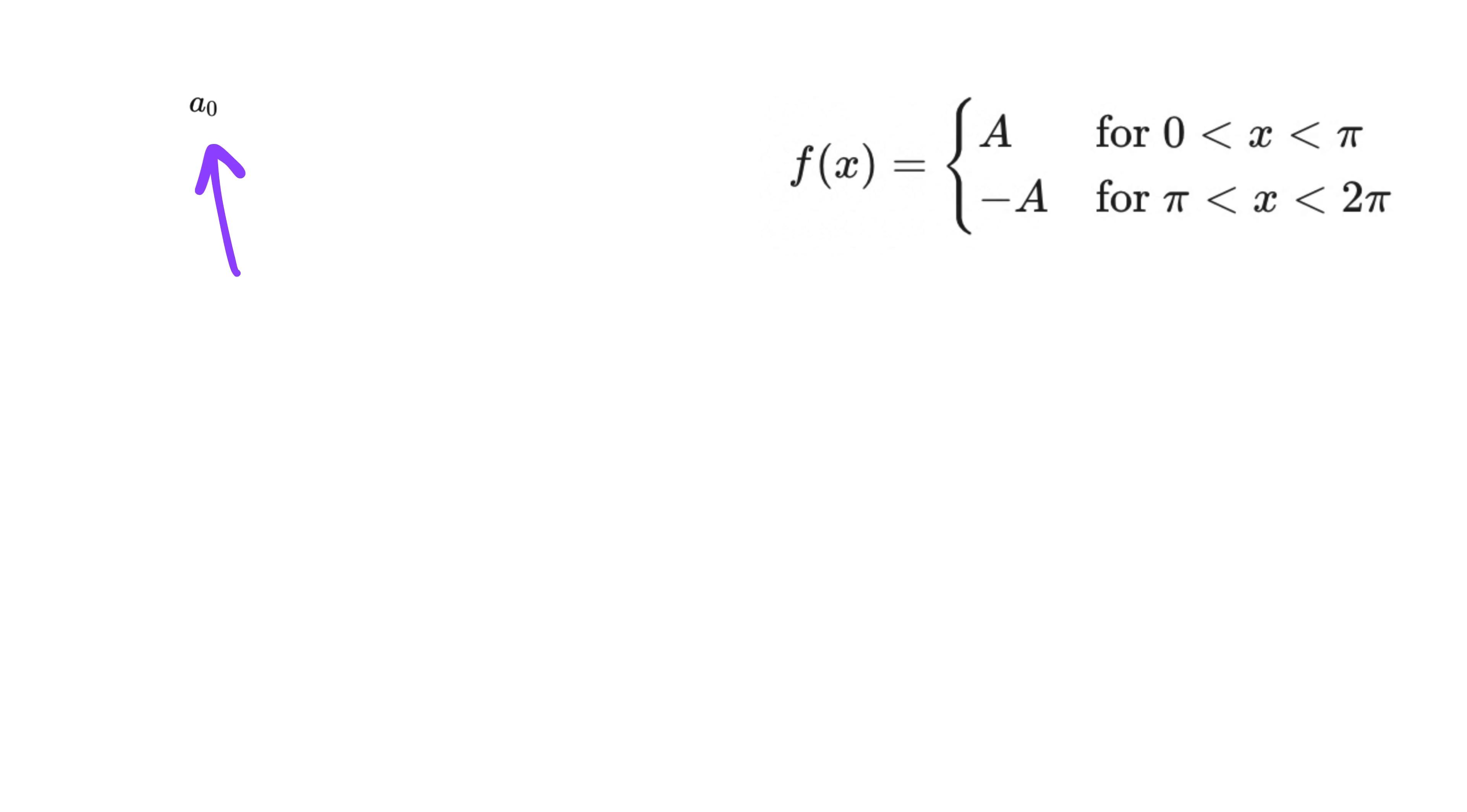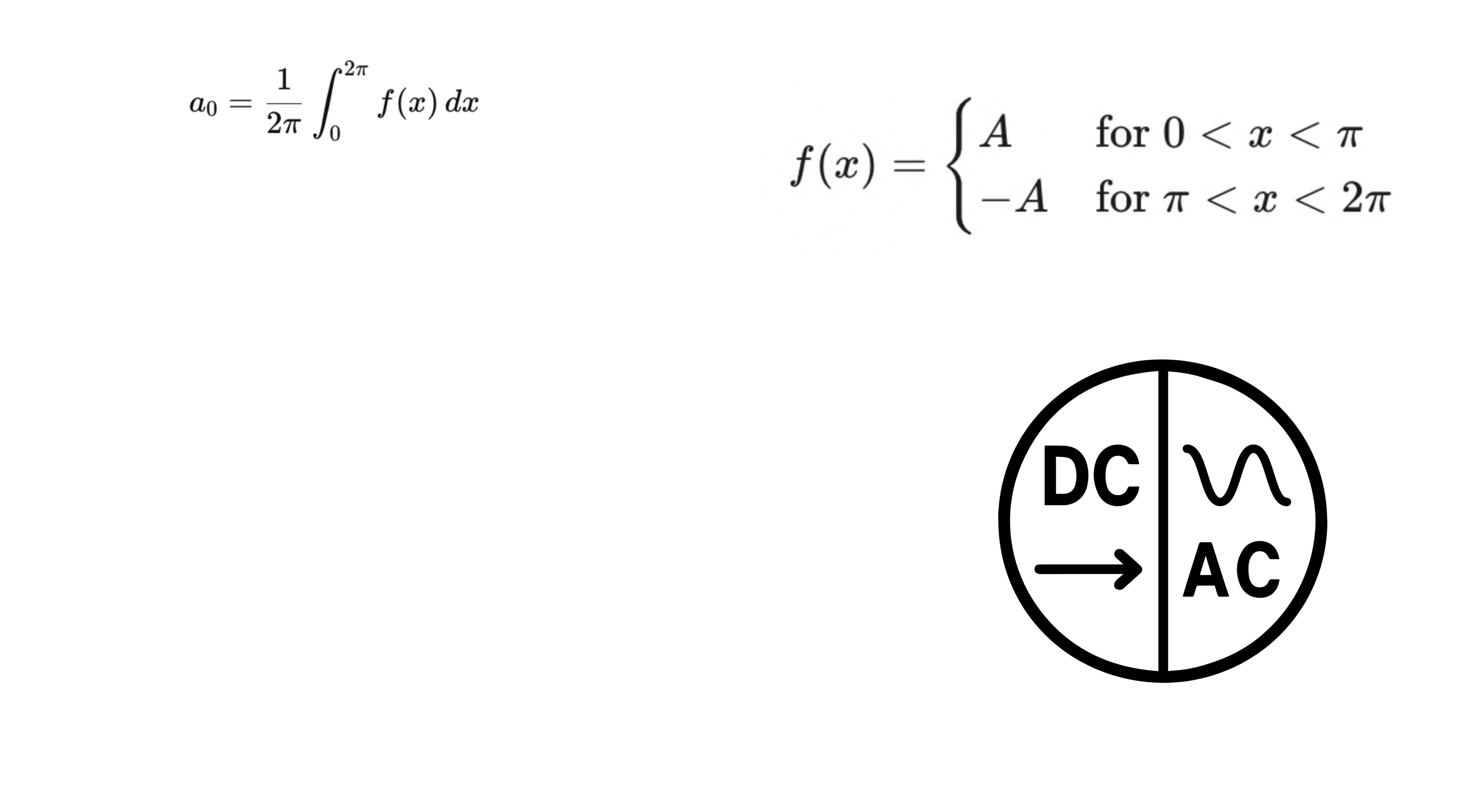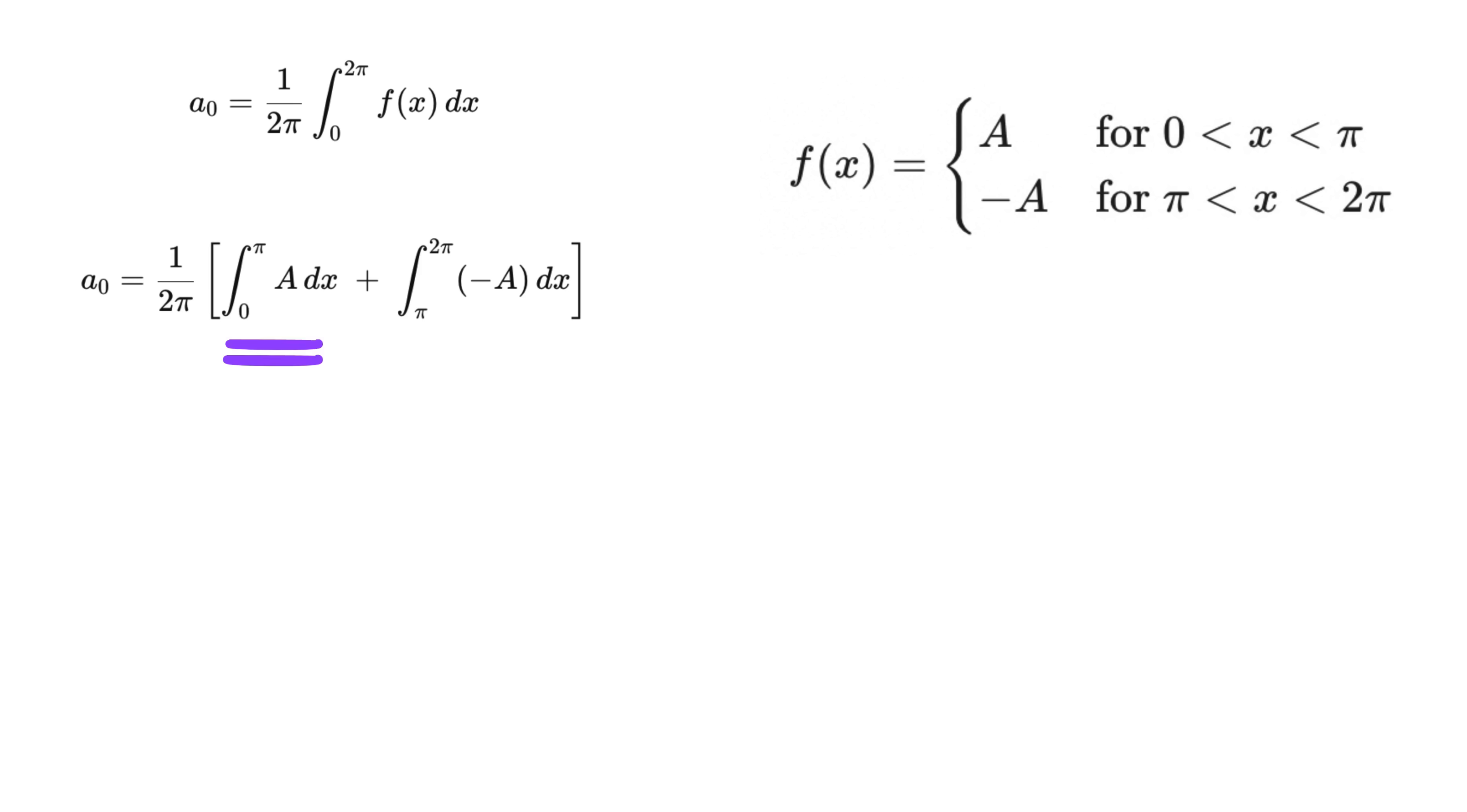First, we will calculate A₀, or the constant term, which is just the average of this signal over one period for which we use this integral. You know, AC and DC currents, right? We also call this A₀ as the DC component of the wave. First, we split the integral into two parts. One from 0 to π, where the signal is positive A, and the other from π to 2π, where the signal is negative A. In the first part, the value of the signal is constant at A, so when we integrate over that interval, we just multiply A by the length of the interval, which is π. In the second part, the value of the signal is constant at minus A, so integrating over that interval gives minus A times π. Then we add these two results together, which equals 0.